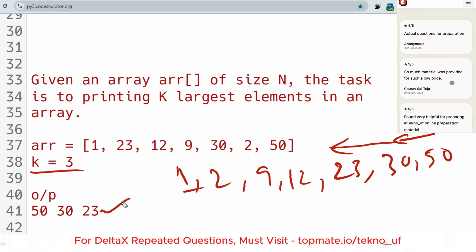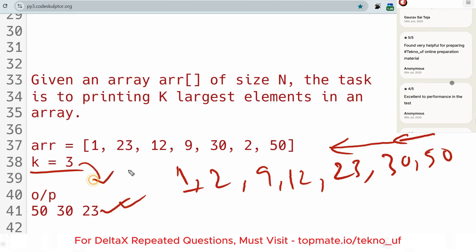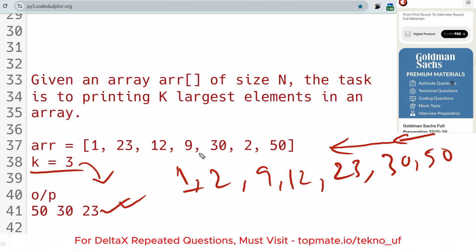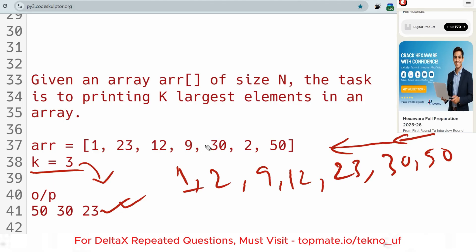If the value of K is 2, then only 50 and 30 should be printed. The task is basically very clear: you have to sort the array in ascending order or descending order.